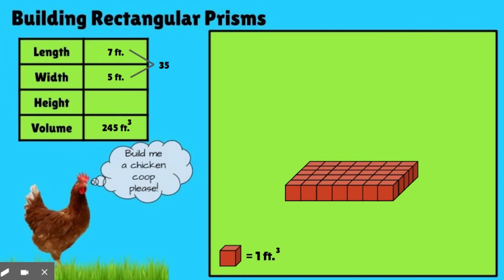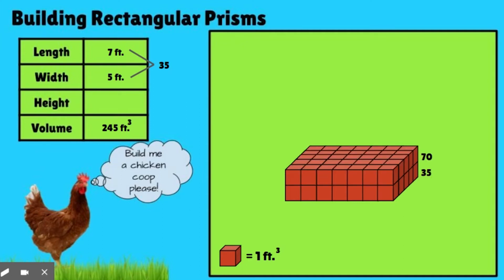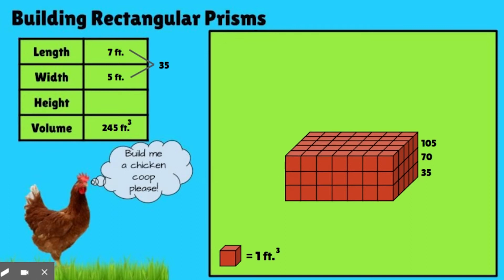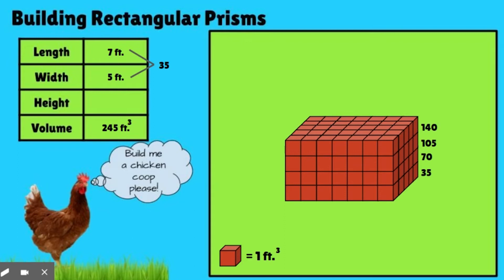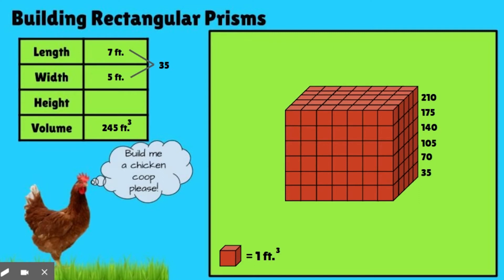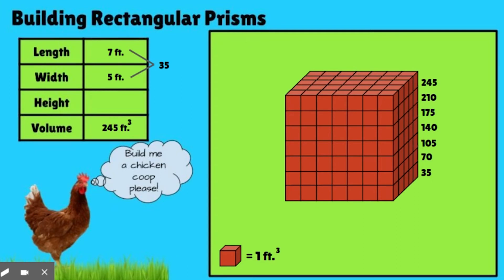Or you can list the multiples. Well, you know, one layer is going to be 35 feet. We know that the second layer, if we add them up, is 70 feet. The third layer will be 105 cubic feet. The fourth layer is 140. Fifth is 175. Sixth is 210. And the seventh is 245 cubic feet. So we know that this is going to be seven feet. So again, you could list your multiples of 35, knowing that seven times five is 35. And that'll be the area of the base.